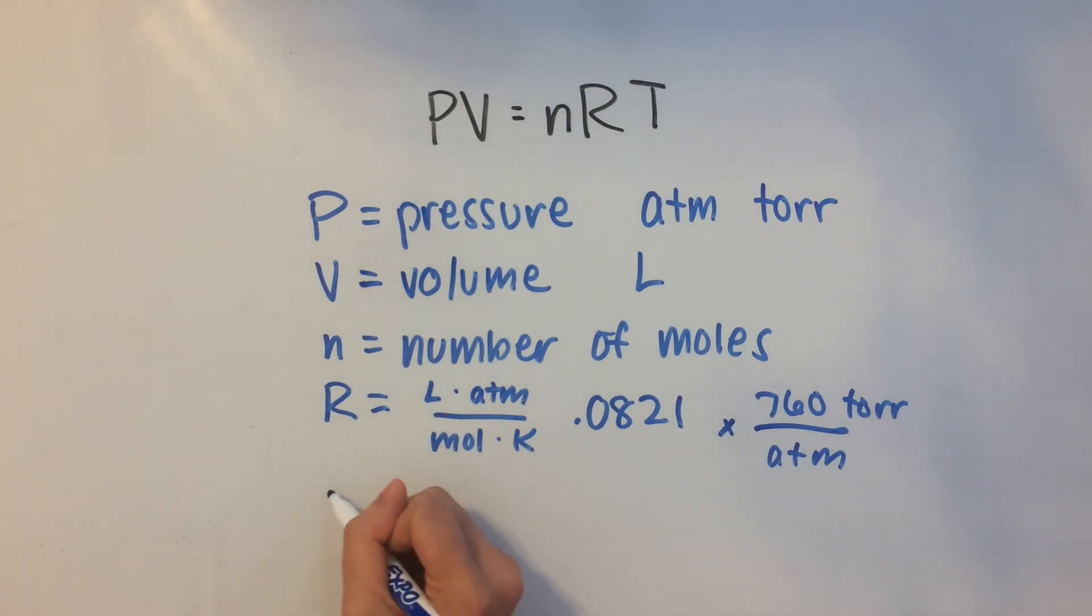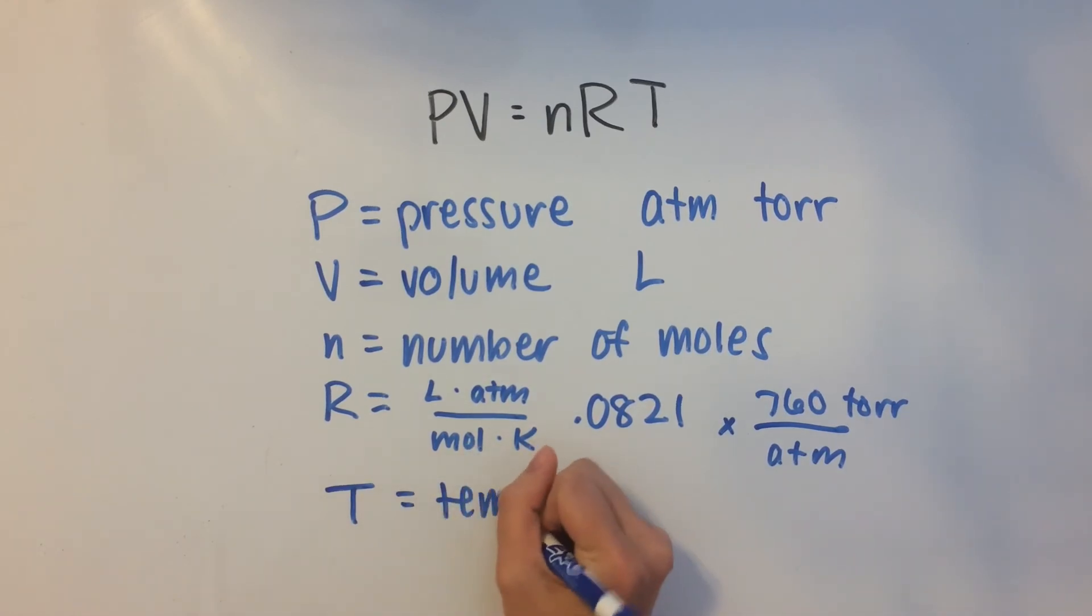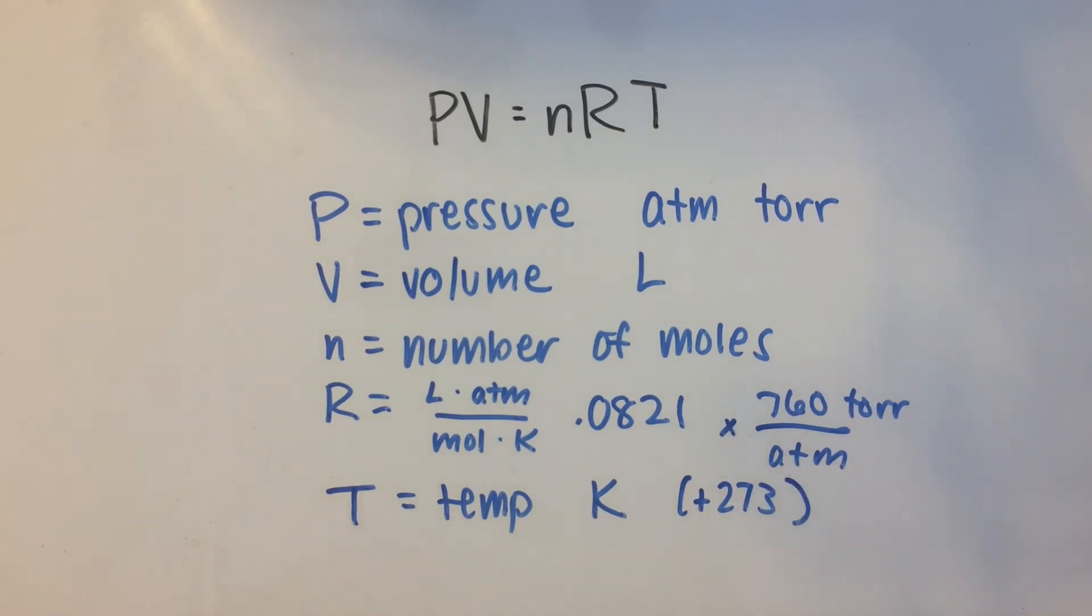Last of all, we have T, which stands for temperature. And that's going to be measured in Kelvins. So this is the tricky part because usually a problem will give it to you in Celsius, but you'll have to add 273 to that to get it to Kelvins.